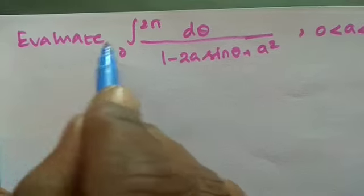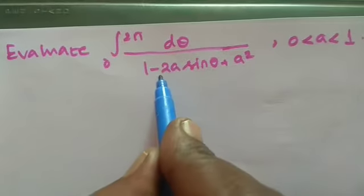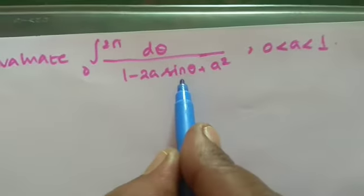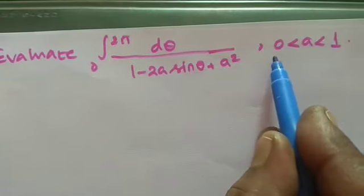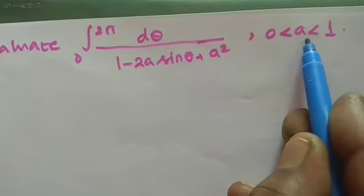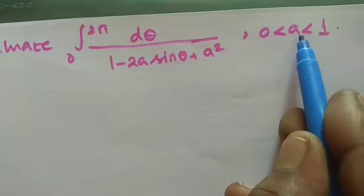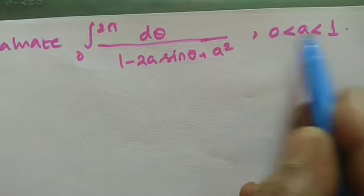Let us evaluate the integral from 0 to 2π of dθ divided by (1 minus 2a sinθ plus a squared), where the condition is 0 less than a less than 1, meaning a lies between 0 and 1.